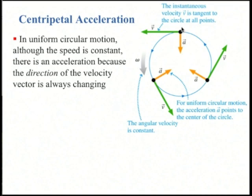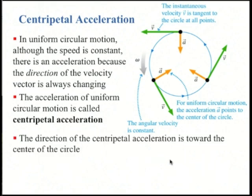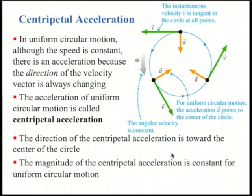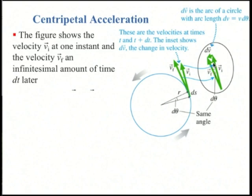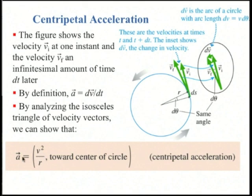The centripetal acceleration, shown as a yellow vector, is due to the fact that the direction of velocity is constantly changing. The acceleration of uniform circular motion is called centripetal acceleration, and it always points towards the center of the circle. Its magnitude is constant. By subtracting v final from v initial over a very small delta t and looking at similar isosceles triangles in the textbook, you can show the magnitude of centripetal acceleration equals v squared divided by r, where v is the uniform speed.